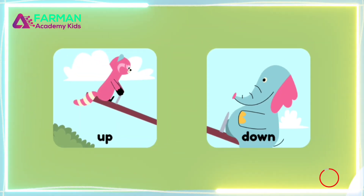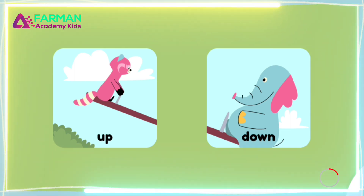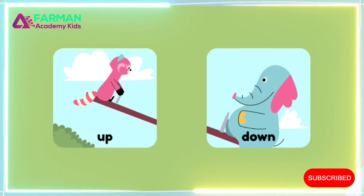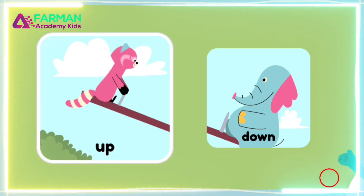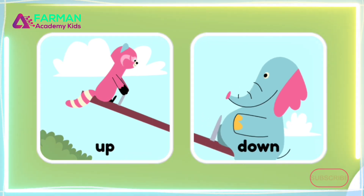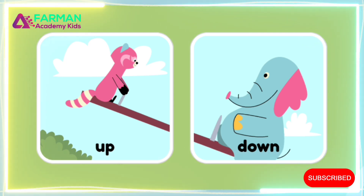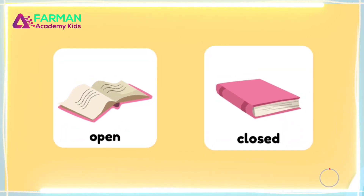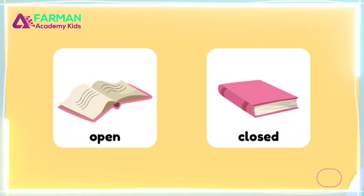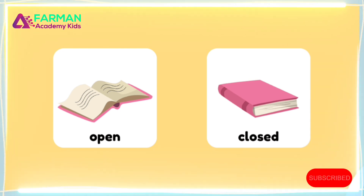Raya is up, not down like Ollo. Tap both pictures. If a book is open, it is not closed. Tap both pictures.